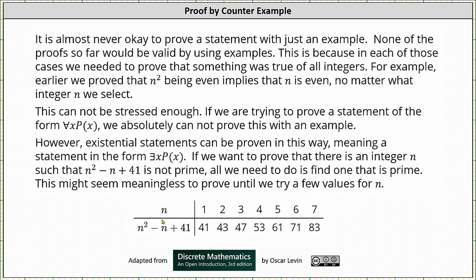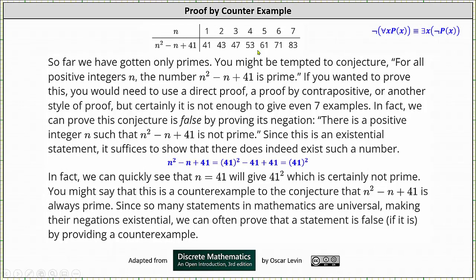This might seem meaningless to prove until we try a few values of n. Looking at the table, notice for the values of n from one through seven, n squared minus n plus 41 results in a prime. Because we've only gotten primes so far, we might be tempted to conjecture that for all positive integers n, the number n squared minus n plus 41 is prime. If we wanted to prove this, we would need to use direct proof, a proof by contrapositive, or another style of proof — but certainly it is not enough to give even seven examples.